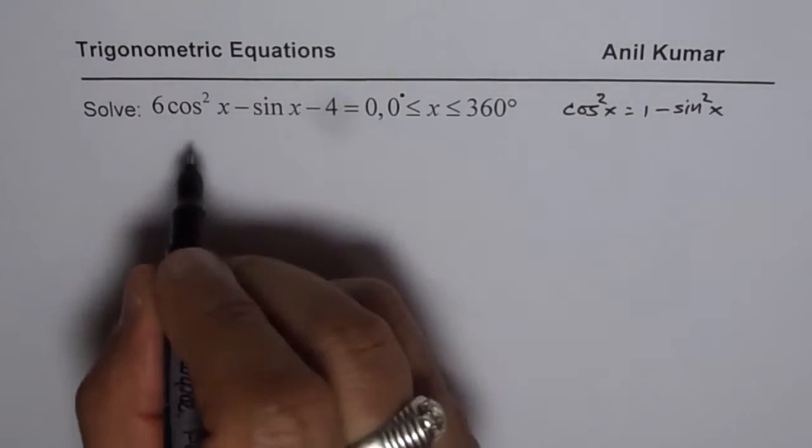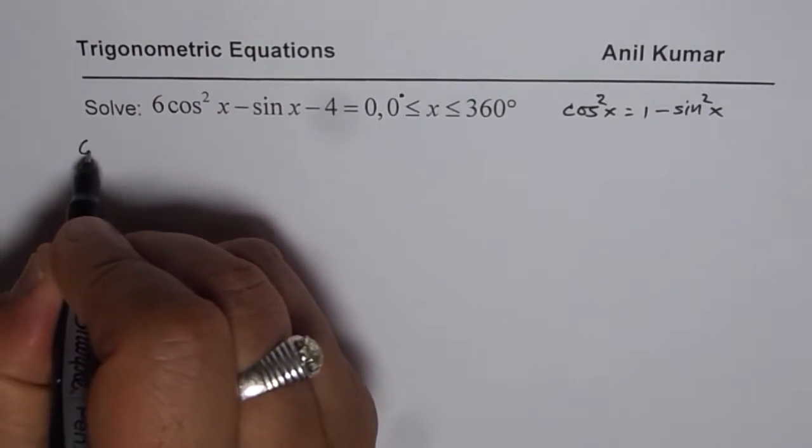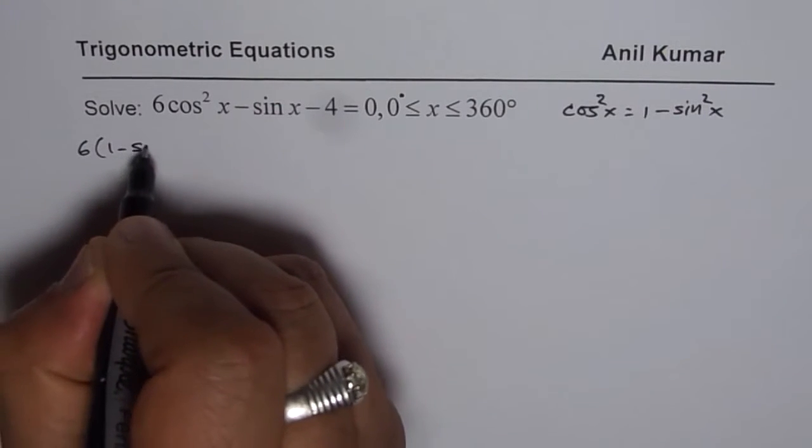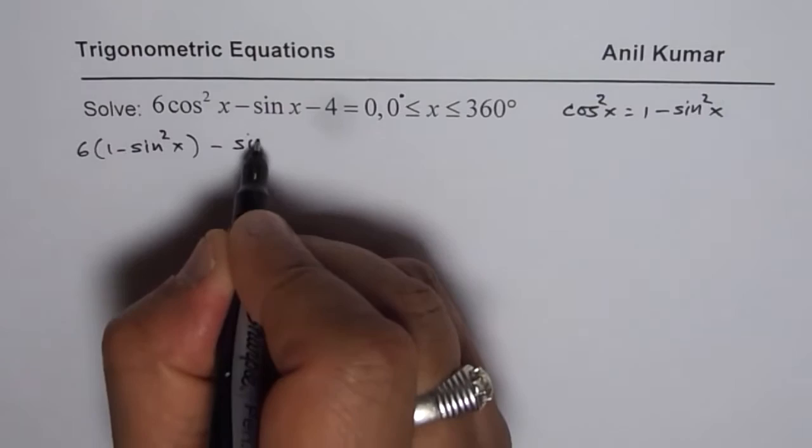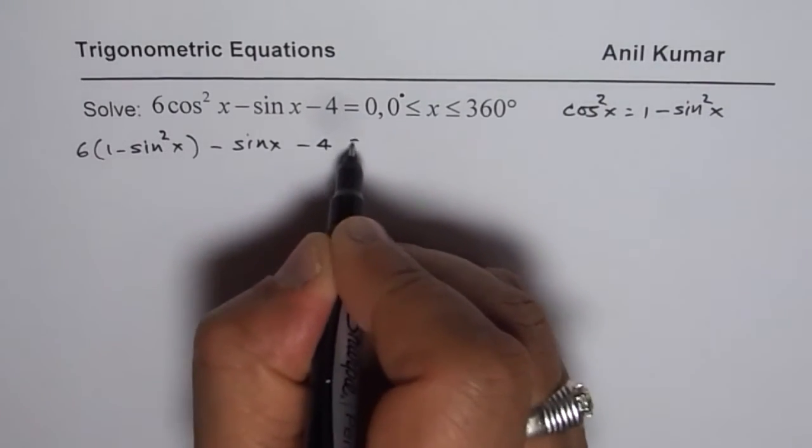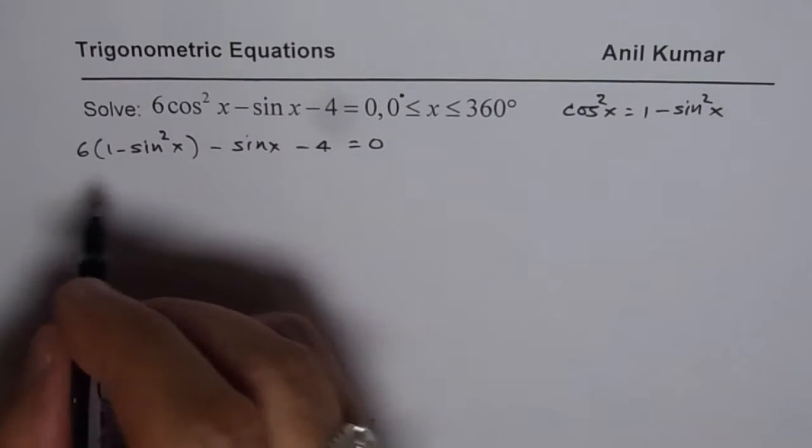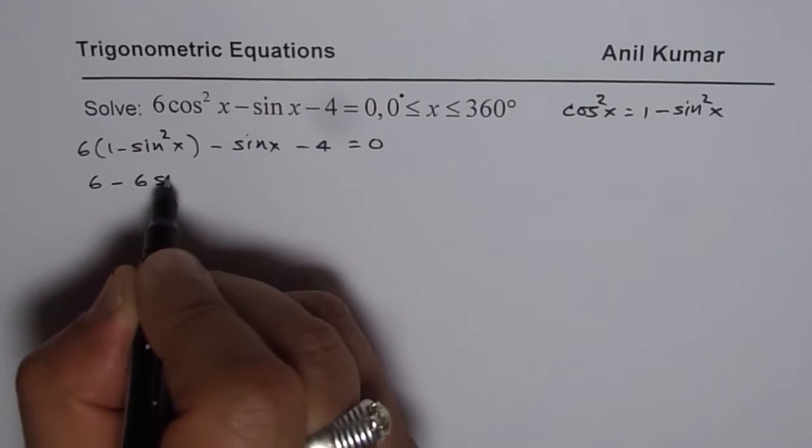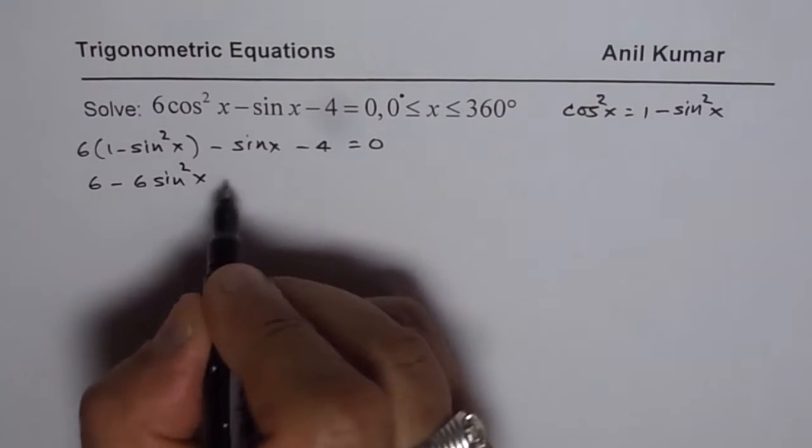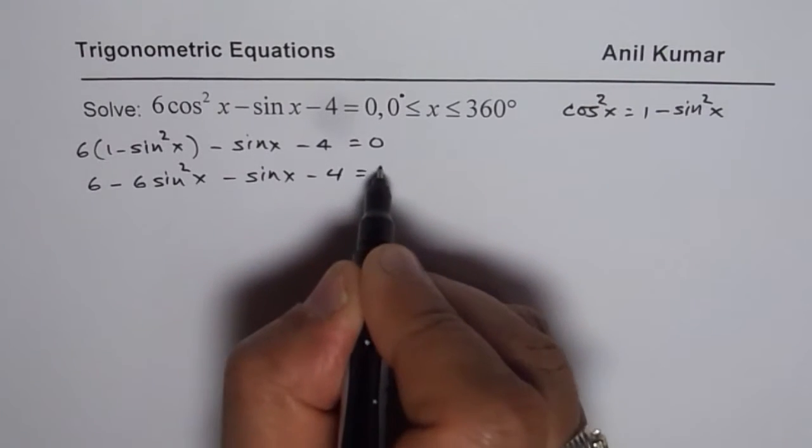Then we will have quadratic equation, quadratic trigonometric equation in sin. So we will have 6 times 1 minus sin square x minus sin x minus 4 equals to 0. The left side has been modified. Let us open this bracket. 6 times 1, then 6 sin square x with minus, then minus sin x minus 4 equals to 0.